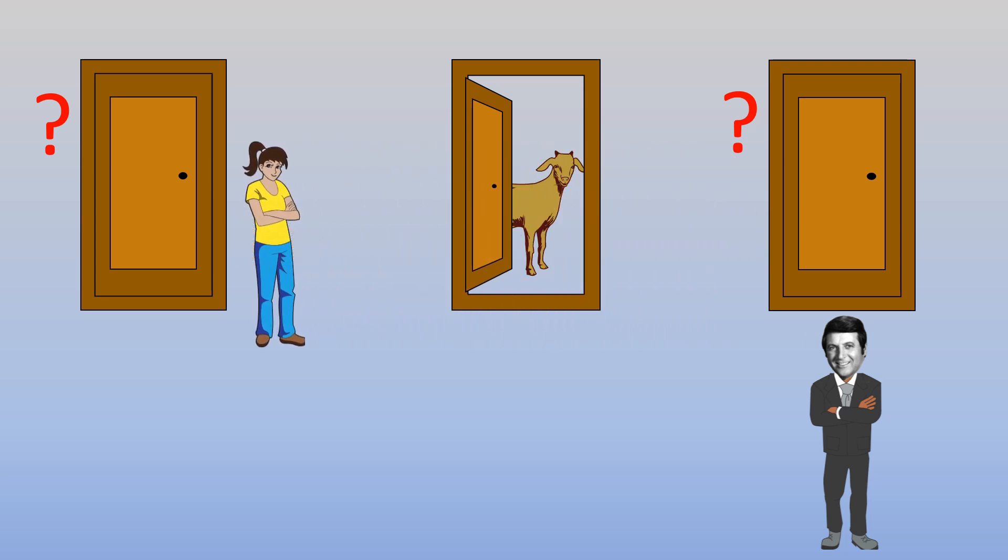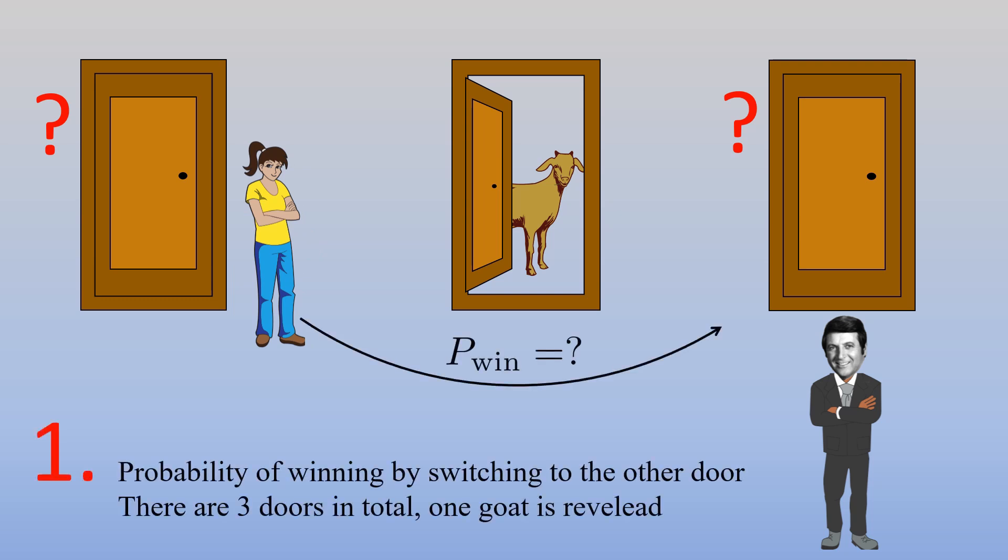Our first problem specifically is what is the probability of winning the car if you switch to the other door when one of the goats is revealed? This is actually our first problem, the well-known Monty Hall problem.